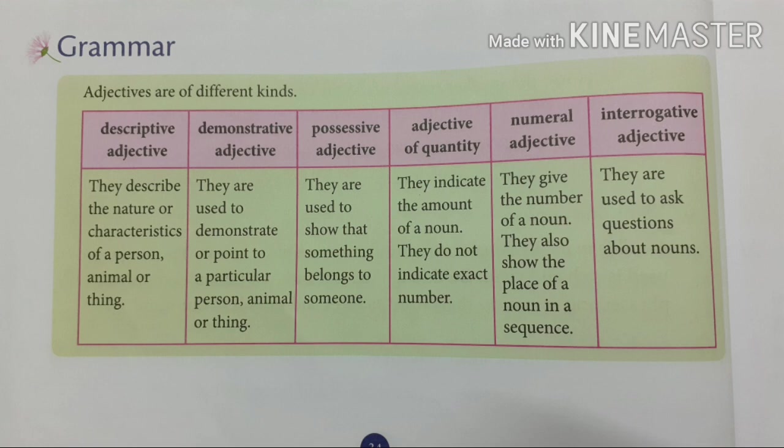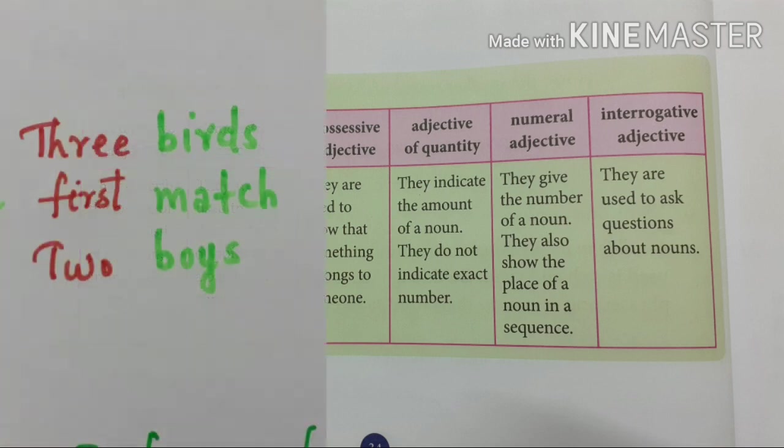What is a numeral adjective? They give the number of a noun and also show the place of a noun in a sequence. For example: three birds, the first match, two boys. These are examples of numeral adjectives.